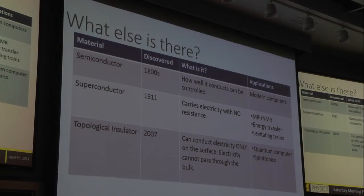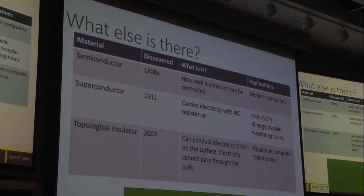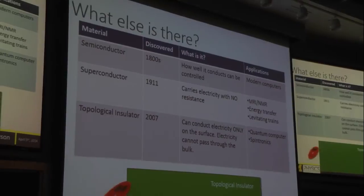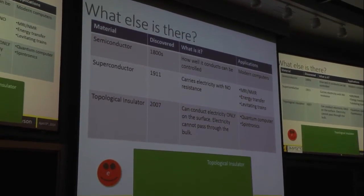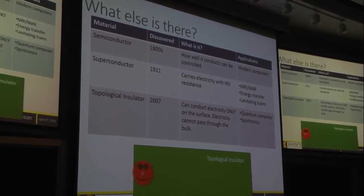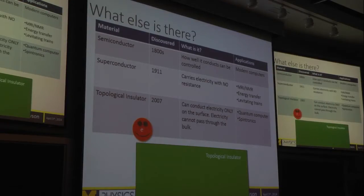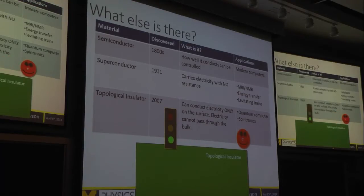Topological insulators were first seen in 2007 — very new physics, another 100 years after the superconductor was first discovered. Their interesting property is they can conduct electricity only on the surface and not through the inside. Let's say this green block is a topological insulator. Mr. Electron comes in and wants to get to the other side. He cannot pass through the bulk, but if he crosses the surface, that is A-OK. Electricity can move across the surface of a topological insulator, but not through the bulk.